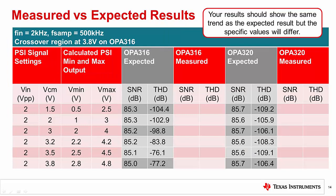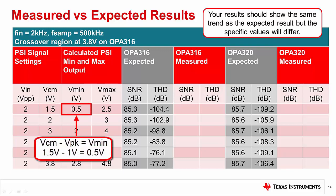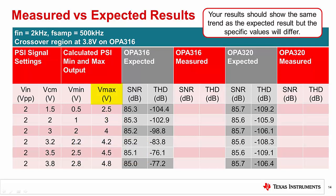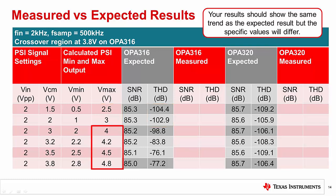This table shows the expected results for the OPA316 and OPA320. Let's look at the first row. The input is set to 2 volts peak-to-peak or 1 volt peak, and the common mode voltage or offset is set to 1.5 volts. The sine wave negative peak is at VCM minus Vpeak — in this case, 1.5 volts minus 1 volt equals 0.5 volts. Similarly, the positive peak is 1.5 volts plus 1 volt, which is 2.5 volts. The positive peak, denoted Vmax, is the number we need to pay attention to. When Vmax is below the crossover voltage, we will not see crossover distortion and AC performance should be good. When Vmax is above the crossover voltage, we should see crossover distortion and AC performance should be degraded.